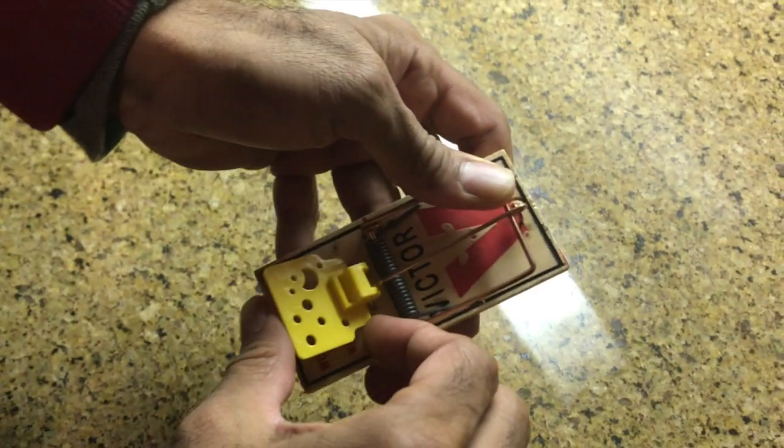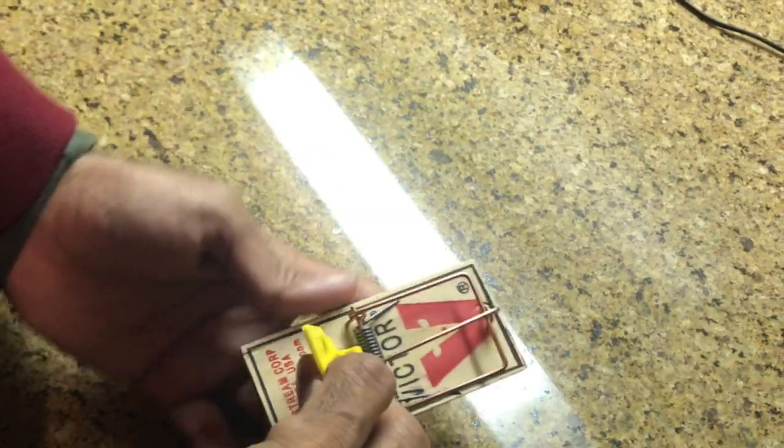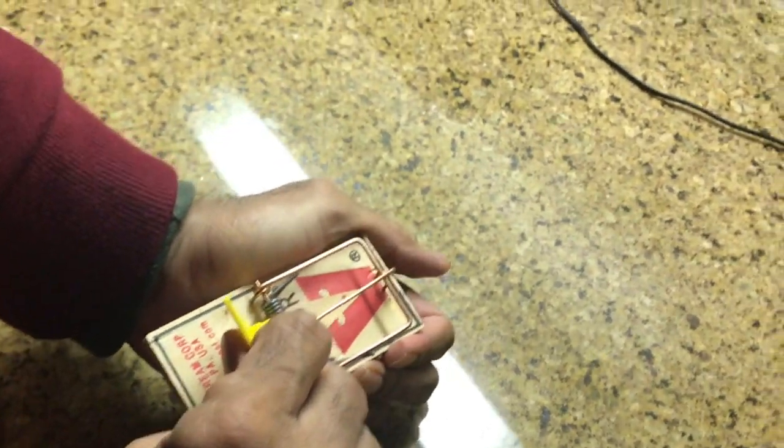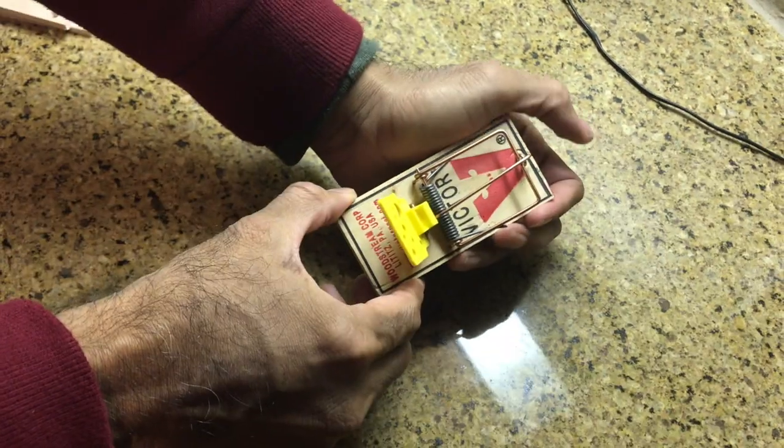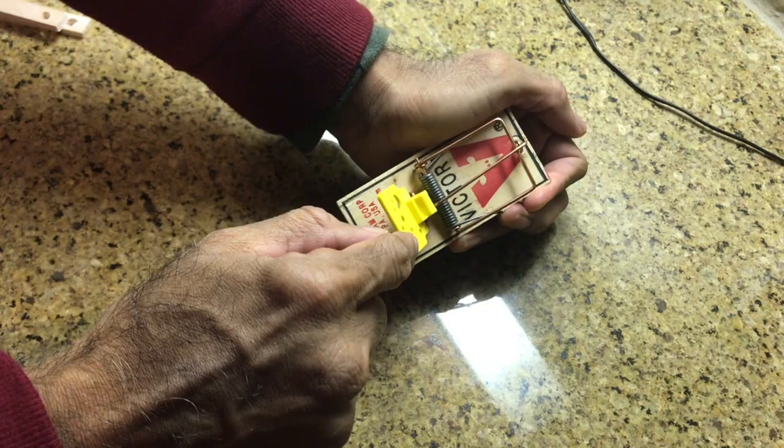So here's the mouse trap, a standard device you can get it online. It's a very dangerous device. Here I'll show you how it works. If you press this yellow flap here, it's going to trigger the device.